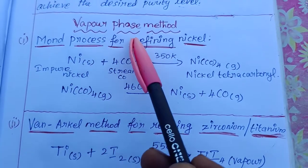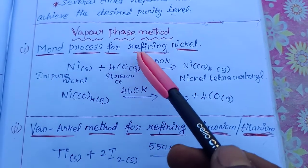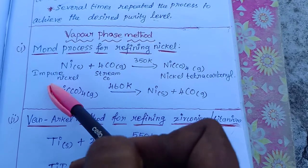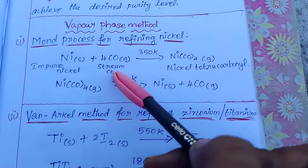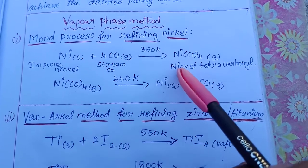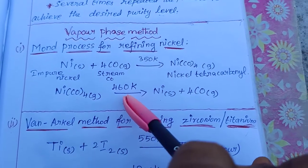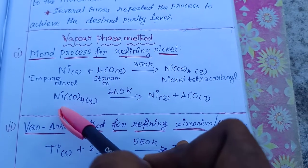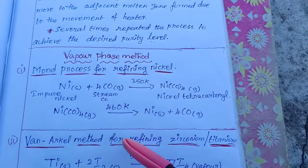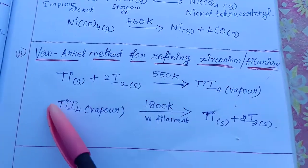You will get pure metal through zone refining. Next is the vapor phase method, which has two steps. First is the Mond process for refining nickel metal only. Impure nickel solid reacts with carbon monoxide heated at 350 Kelvin to form nickel tetracarbonyl Ni(CO)₄. The nickel tetracarbonyl is then heated to 460 Kelvin, causing the complex to decompose to form pure nickel while carbon monoxide is eliminated.